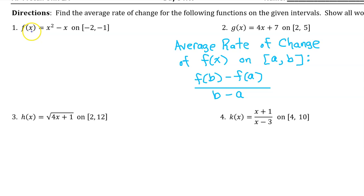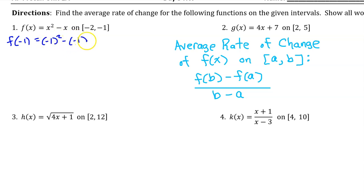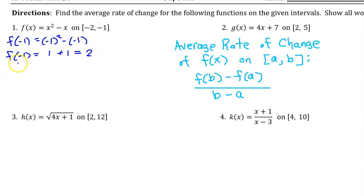To find the average rate of change of f(x) on this interval, we need to start by finding f(−1). Plugging in −1 for x, we get (−1)² minus (−1). So f(−1) is positive 1, and minus a negative is addition, so this is 1 plus 1, which is 2.